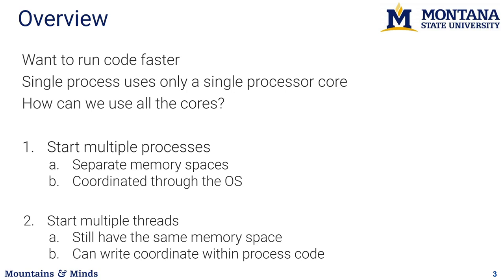To do this there are basically two ways. You can start multiple processes — that's running multiple programs at the same time. The cool thing in C and C++ is that you can start multiple processes from within the code itself. Those processes will have separate memory spaces, so they're pretty safe, but you can still coordinate them through the OS using sockets or signals. Or you can start multiple threads, which have the same memory space, so you can share global variables between them, use sockets, and have more flexibility.